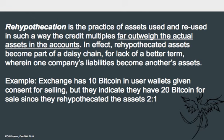That's really what rehypothecation is. In traditional markets they would typically compensate users for doing that, but it's something we really don't want to see in any markets because it leads to distortion of price discovery of those assets. The traditional definition: it's the practice of assets used and reused in such a way that credit multiples far outweigh the actual assets in the accounts — in this case, the wallet of the exchange. Rehypothecated assets become part of a daisy chain wherein one company's liabilities become another's assets. For example, an exchange with 10 bitcoins in user wallets may indicate on their user interface that they have 20 bitcoin on their trading books for sale — reusing these assets on a factor of two to one.